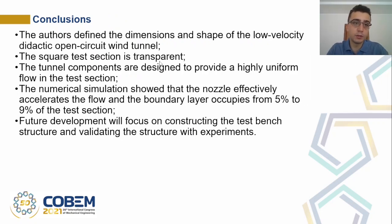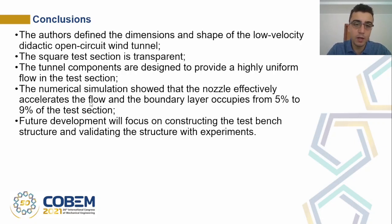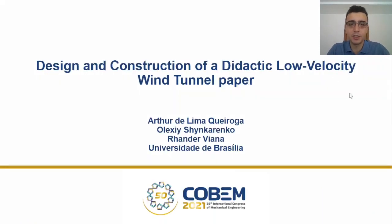The conclusion of this work is that the authors defined the dimensions and shape of the low-velocity didactic open-circuit wind tunnel. The square test section is transparent so we can see the experiments. The tunnel components are designed to provide a highly uniform flow in the test section, and the numerical simulations show that the nozzle effectively accelerates the flow and the boundary layer occupies from five to nine percent of the test section. Future development will focus on constructing the test bench structure and validating it with experiments. Thank you for your attention, and I am here to answer your questions.